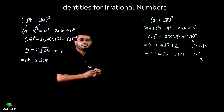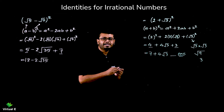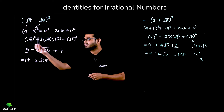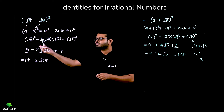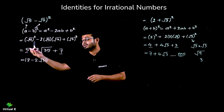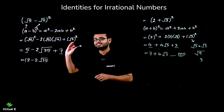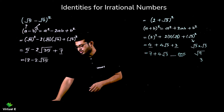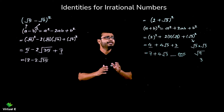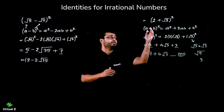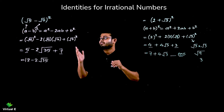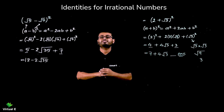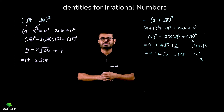So the answer is 12 - 2√35. Very simple — just apply the identity and follow the rules of irrational numbers when squaring. Don't write 25 — that's incorrect. This is how we apply (a + b)² and (a - b)² identities.